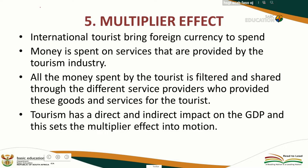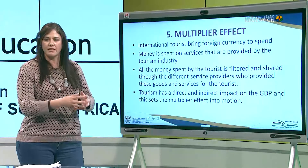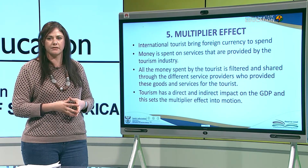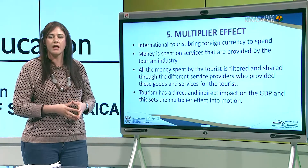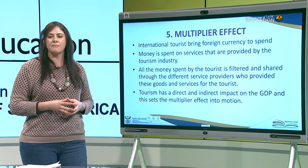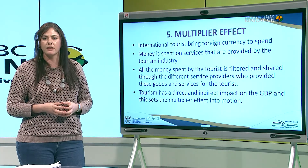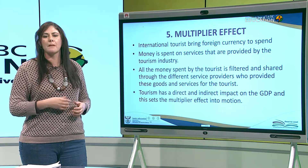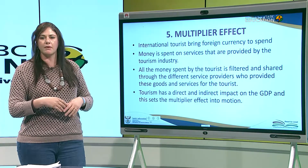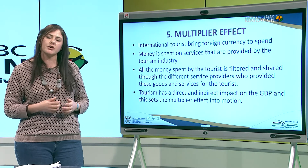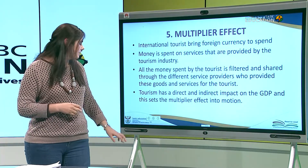The direct impact is because the tourist directly spends money at the hotel and hotel staff are paid. The indirect impact is when the local community also receives some of that money — especially when staff buys products at Checkers, Shoprite, etc.